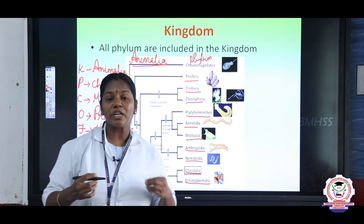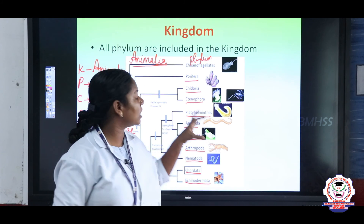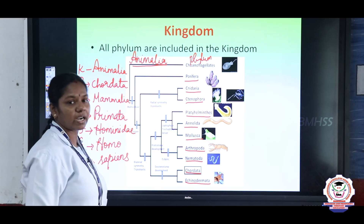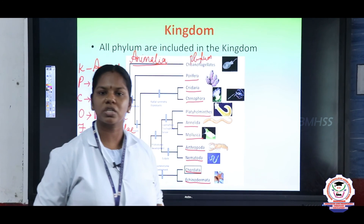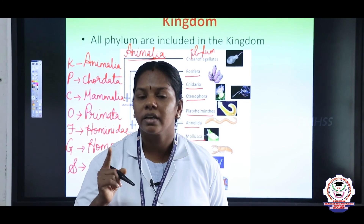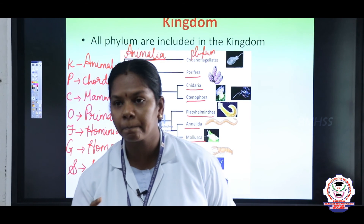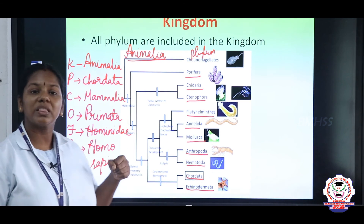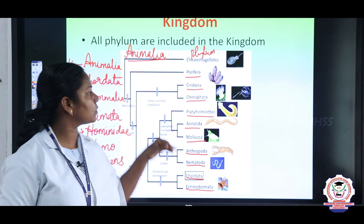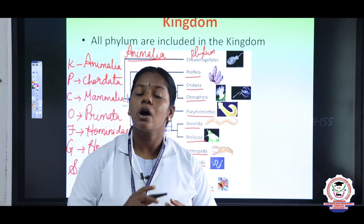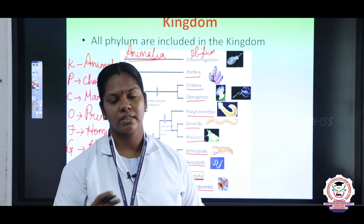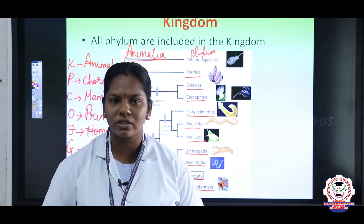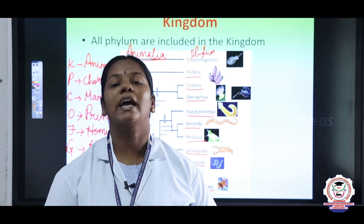When you grow up and study classification and become a scientist, you should know all these levels. If you find any new organism, you should know how to classify it and how to do the systematics for it. The systematic classification of human beings is an important question. A student was asked: what is the scientific name of human beings? The answer is Homo sapiens. With this, the hierarchy of classification topic is complete. Go through the attached study material, question bank, and assessment for this lesson. Thank you, children. Have a nice day.